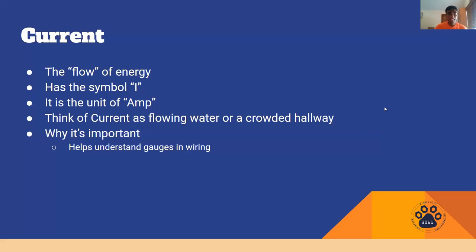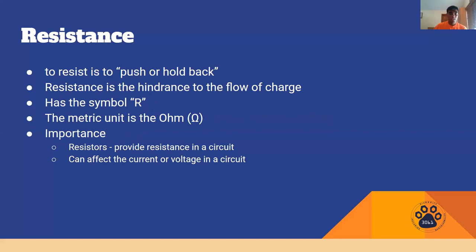The final term that we'll talk about today is probably what is least used during the robotic season, but it's really important to tie all the other two terms together. And this is resistance. Resistance or to resist as a word is to push or hold back and resistance is the same. In fact it's the hindrance to the flow of charge so it's actually holding back or pushing back that flow or the water in the river. In the river parallel it would be a log. So if you put a log in the river, the water wouldn't flow as easily and there would be kind of a blockage there. It would flow, it would get over the log and continue, but it would continue to be at a much slower speed because of that log.